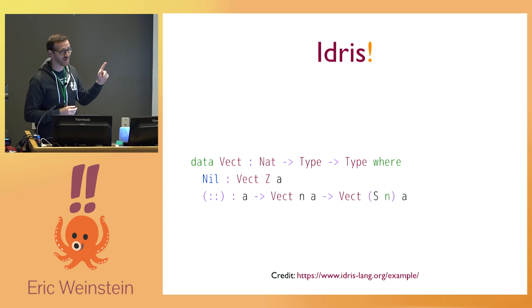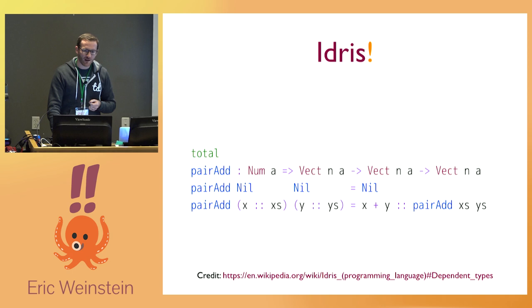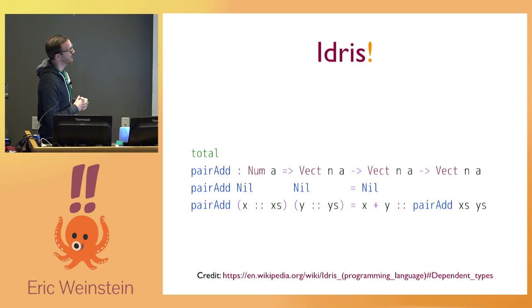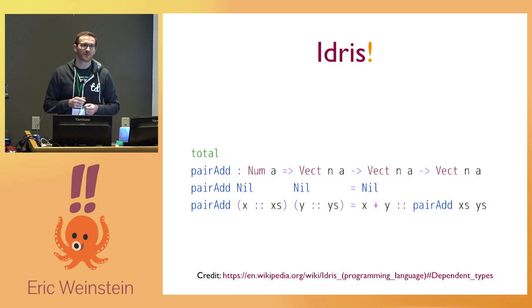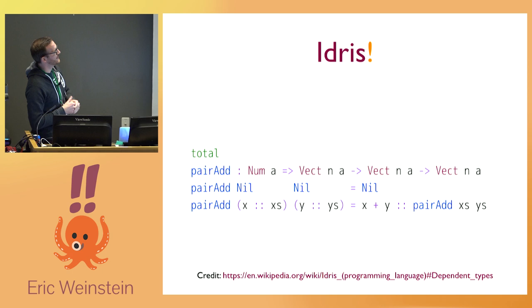So let's look at what this can be used for. Here's a function called pairAdd. You can imagine you have two vectors and you want to add all the elements in them pairwise — so if you have [1, 2, 3] and [4, 5, 6], you'd get [5, 7, 9]. I'll talk about totality in a second, but the idea here is you have Numeric A — similar to Haskell's notion of type classes; these are actually Idris interfaces.